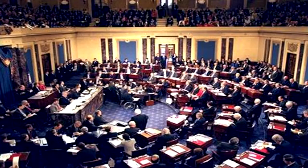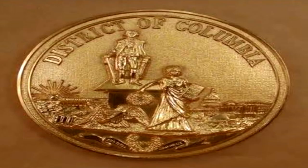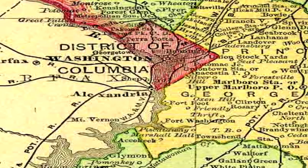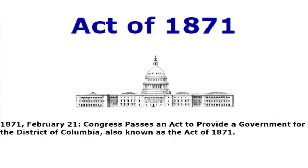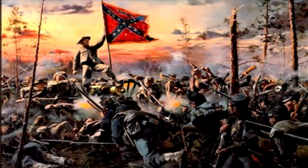What does this mean? It means that Congress, under no constitutional authority to do so, created a separate form of government for the District of Columbia, which is a 10-square-mile parcel of land. The Act of 1871 was passed at a vulnerable time in America. Our nation was essentially bankrupt, weakened, and financially depleted in the aftermath of the Civil War.